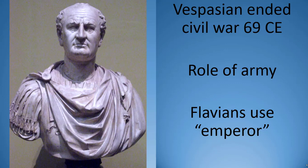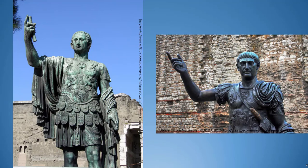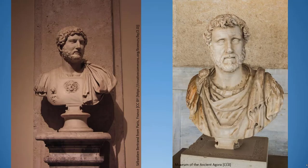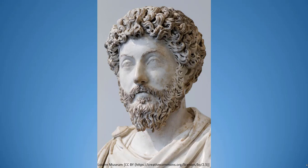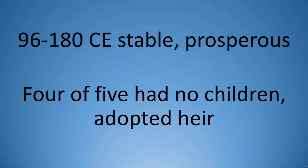From 96 to 180 CE saw the reigns of the five good emperors: Nerva, Trajan, Hadrian, Antoninus Pius, and Marcus Aurelius. During this period of 84 years, the empire was stable, prosperous, and relatively peaceful. The first four of these men had no children, so they adopted men to be their heirs and inherit the empire. This practice helped lend stability and prevent wars over who would rule Rome.